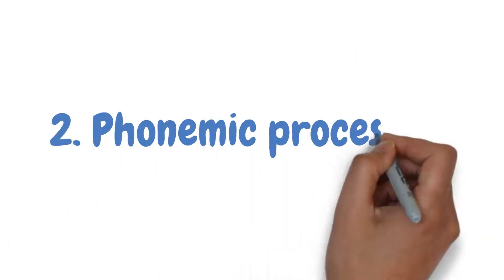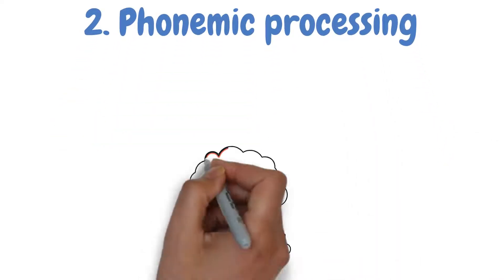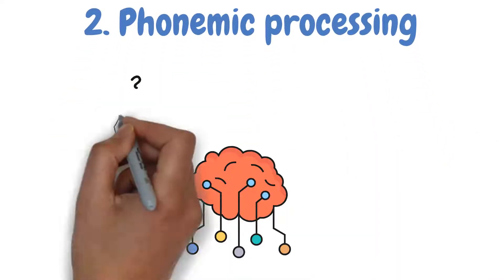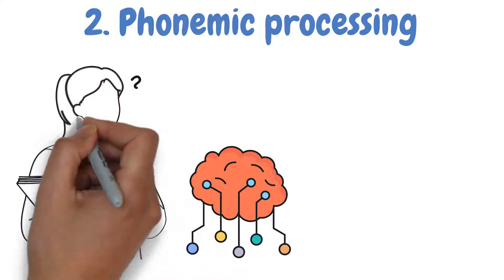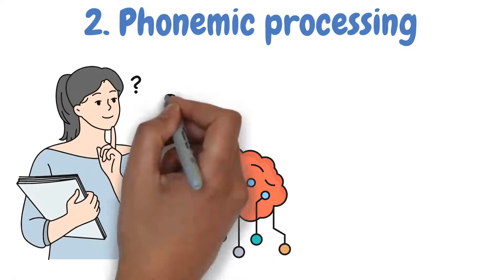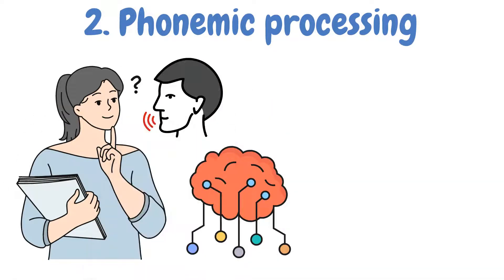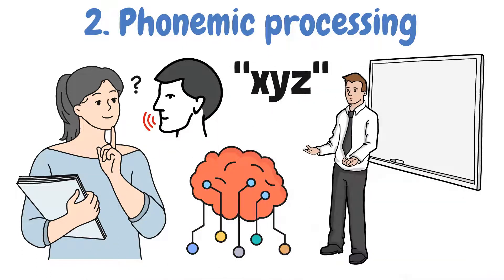The second level is phonemic processing. This level involves encoding information based on how it sounds. For instance, if you are trying to remember a concept explained in a lecture, you might recall the professor's voice, the way certain words were emphasized, or the rhythm of their speech.